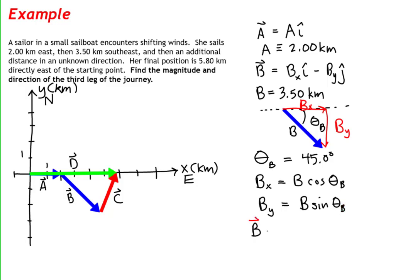That leaves us with b vector is equal to b cosine of theta b i-hat minus b sine theta b j-hat.